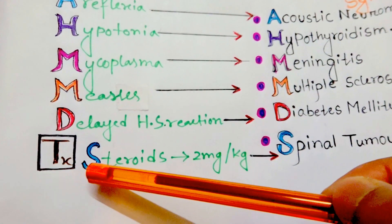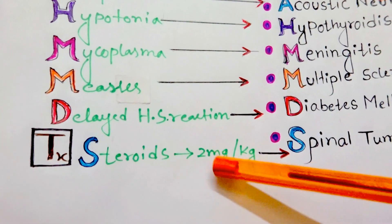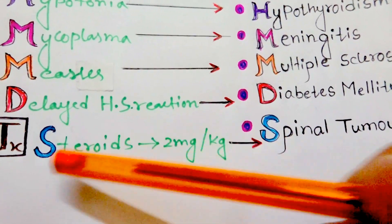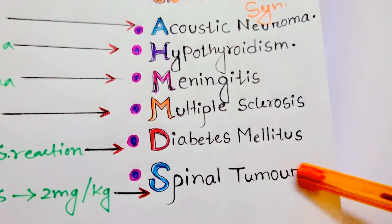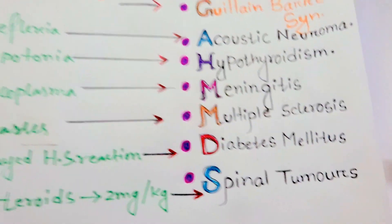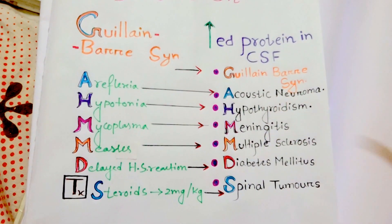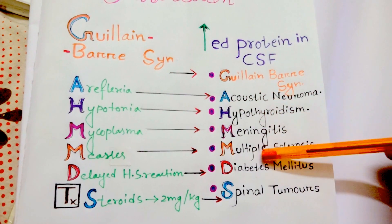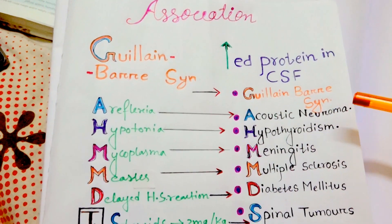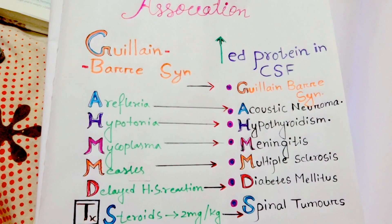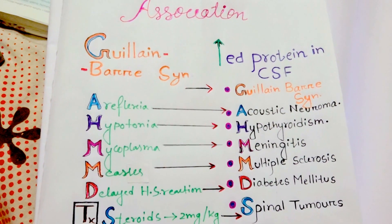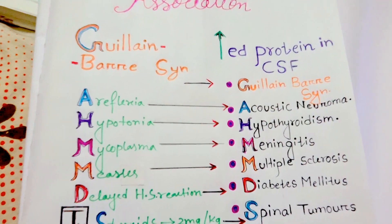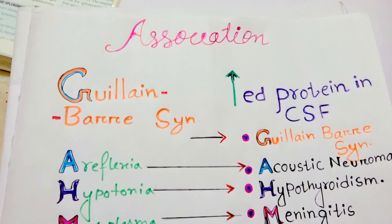The treatment of Guillain-Barré syndrome involves steroids given at 2 mg per kg, similar to the treatment for spinal tumors. Our mnemonic is finished — here are all the causes of increased protein in the CSF. I hope all of you enjoyed my video. Keep watching my mnemonic videos by subscribing to my channel, and thanks for watching.